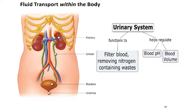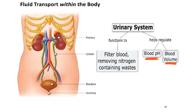Another system involved with fluid transport is the urinary system. Its primary job is to filter nitrogen-containing metabolic waste out of the blood, and as it does that it creates urine — you can think of urine, in part, as filtered blood. Because of the other processes involved in creating urine, the urinary system, along with the respiratory system, regulates the pH of blood. Our urinary system, along with the endocrine system, also regulates the amount of water in our blood, which then determines blood volume.